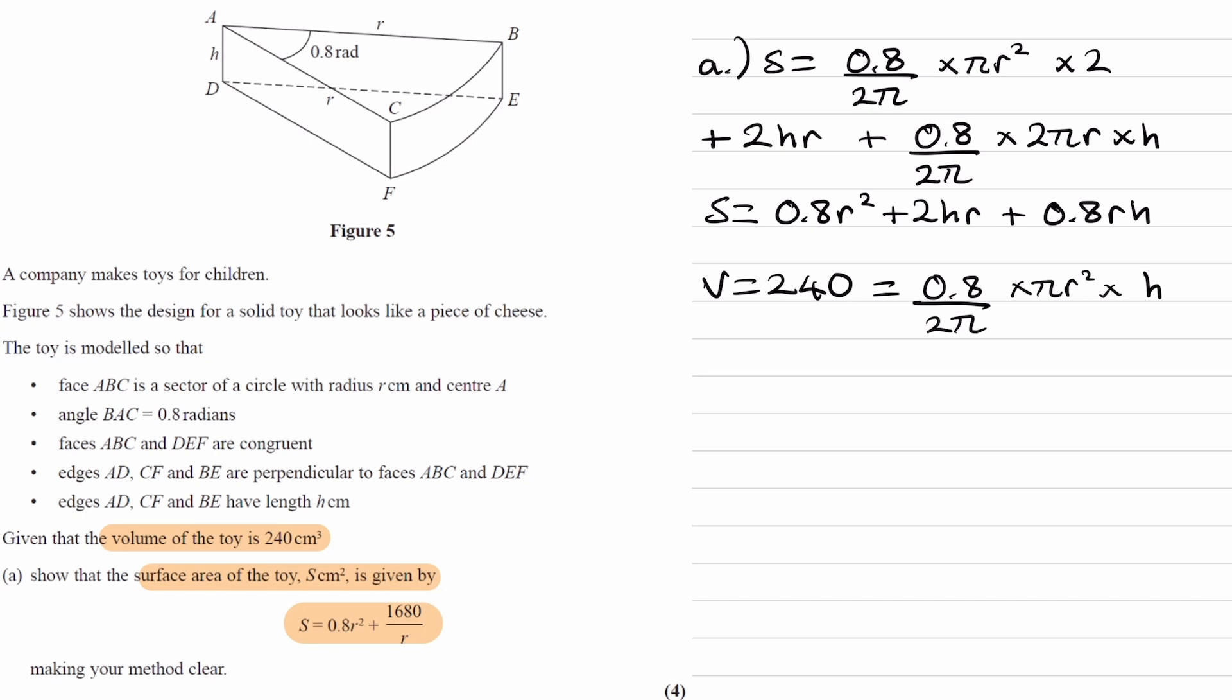Okay, let's simplify that, so 240 is equal to, so the π's cancel out, 0.8 divided by 2 is just 0.4, so it becomes 0.4r²h. Rearrange this for h, 240 over 0.4r². And 240 over 0.4 is 600.